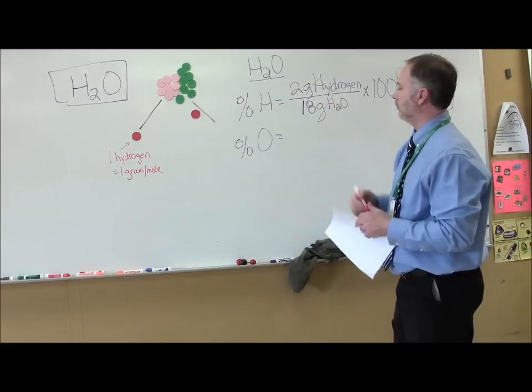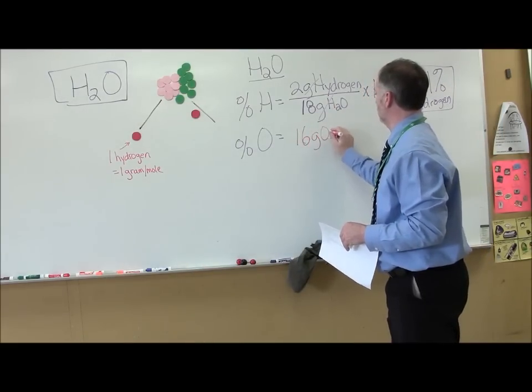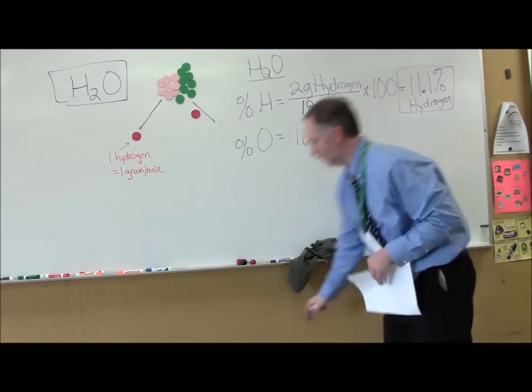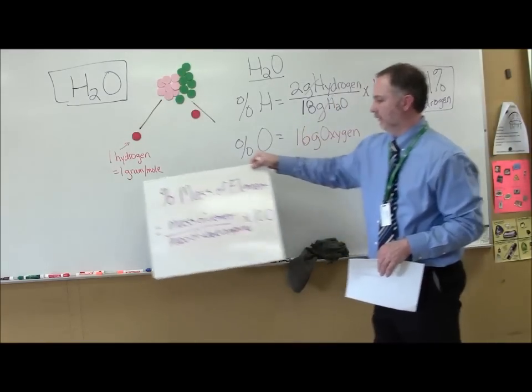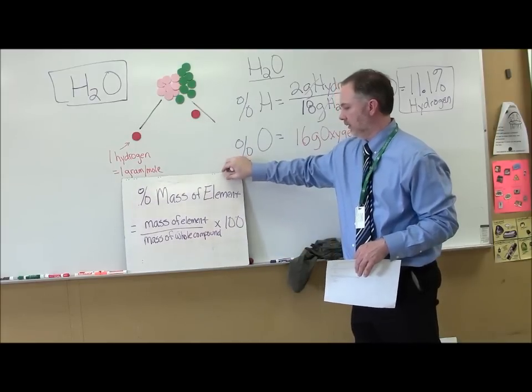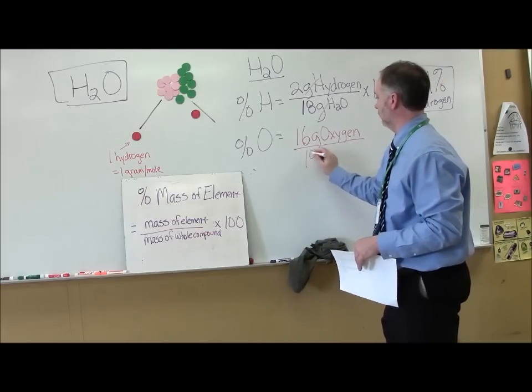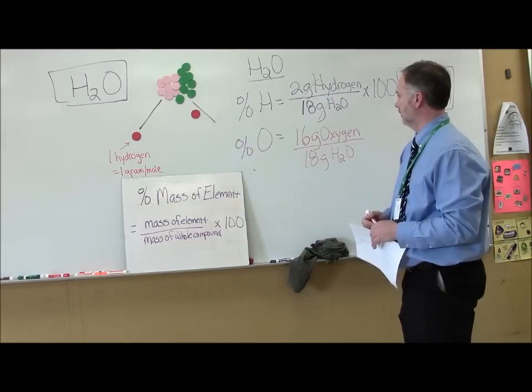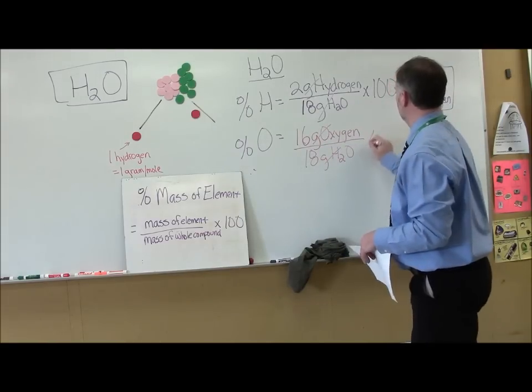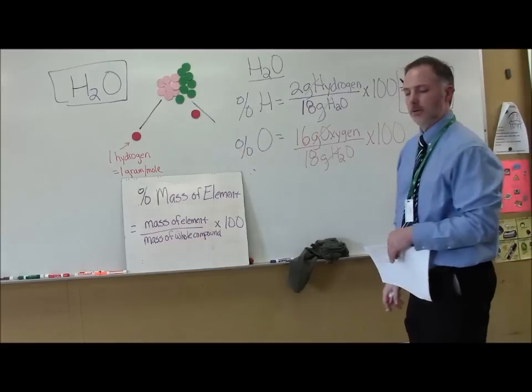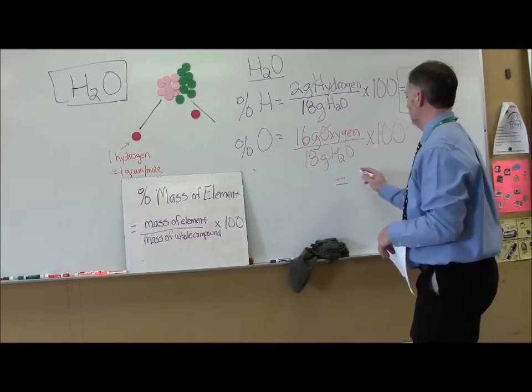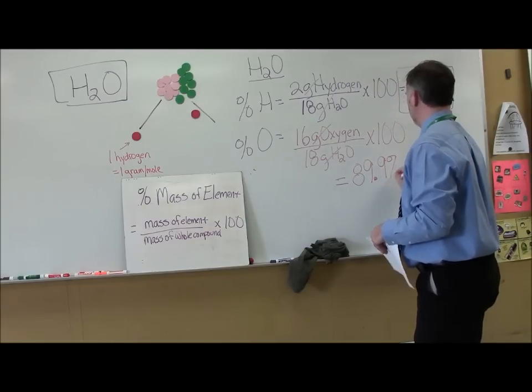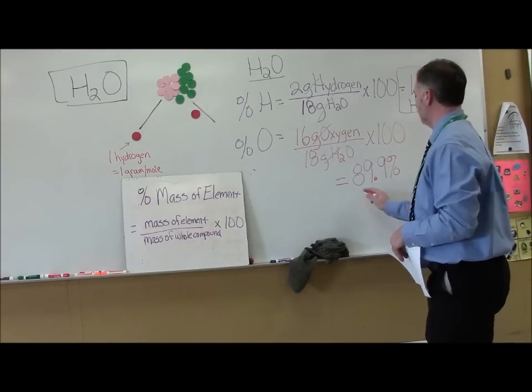I'm going to change colors here. Let's do the oxygen. I have one oxygen. That's going to be 16 grams of oxygen. You look at the oxygen, in here, mass of the whole compound. Let's see if I can stay there. The mass of the whole compound, once again, is 18 grams. Grams cancel out. Times 100. And when you do this math here, you're going to come up with 89.9%. And that's how much is oxygen.